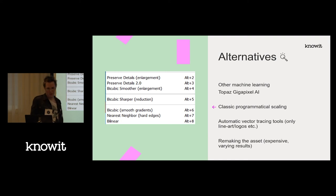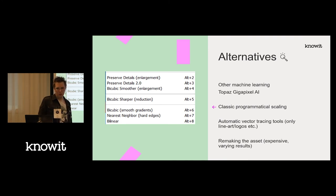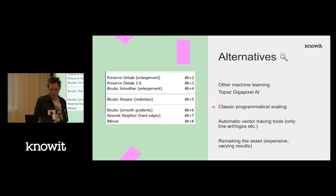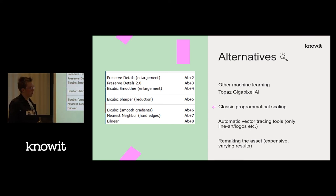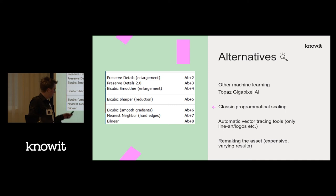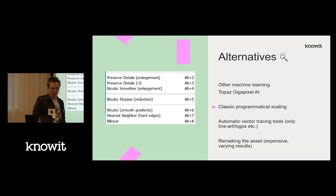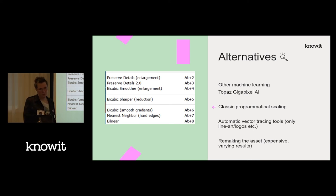Alternatives: I could only find one other reasonably cited AI image upscaler, which I think is paid. Then there's normal scaling in Photoshop, which basically decides how much blurring versus blocky lines you get. Illustrator has some automatic vector tracing that can be good especially for logos with clear lines and might outperform waifu2x for those. And of course, remaking the assets from scratch.